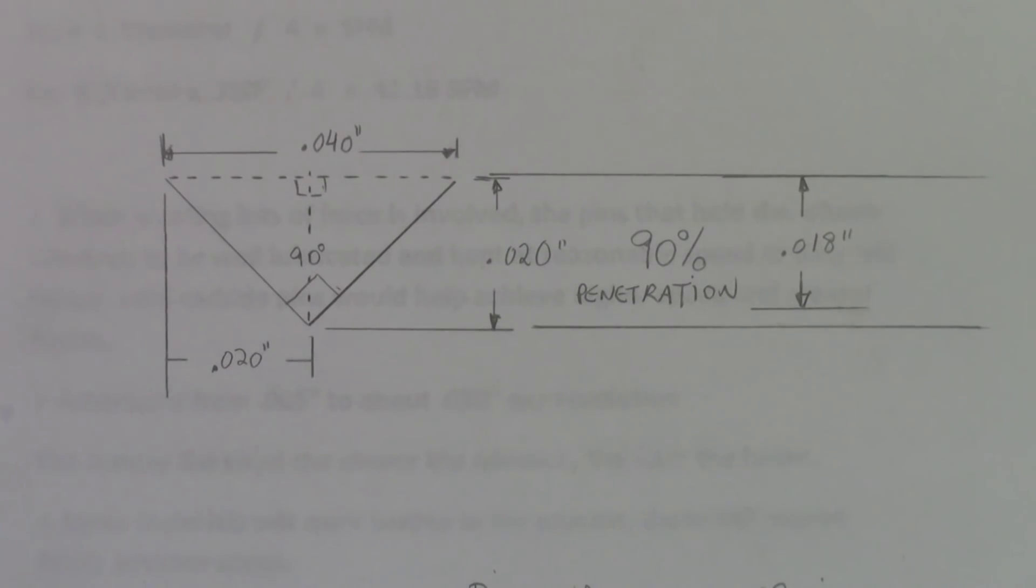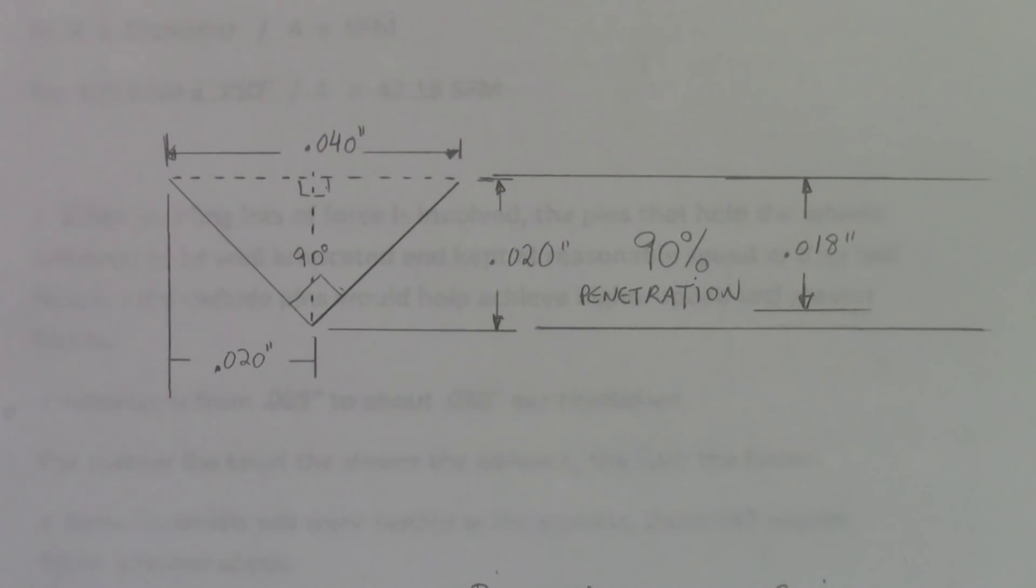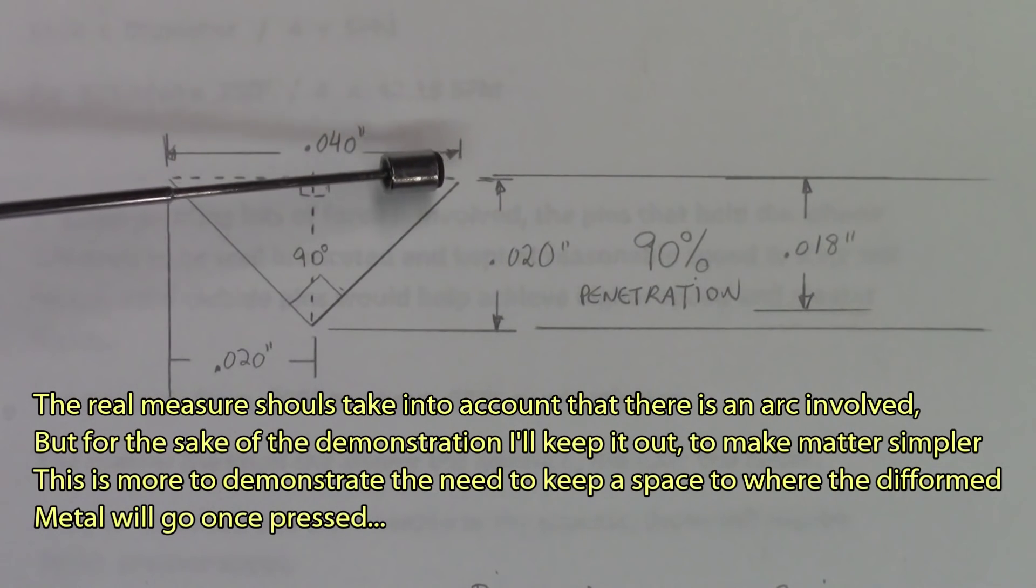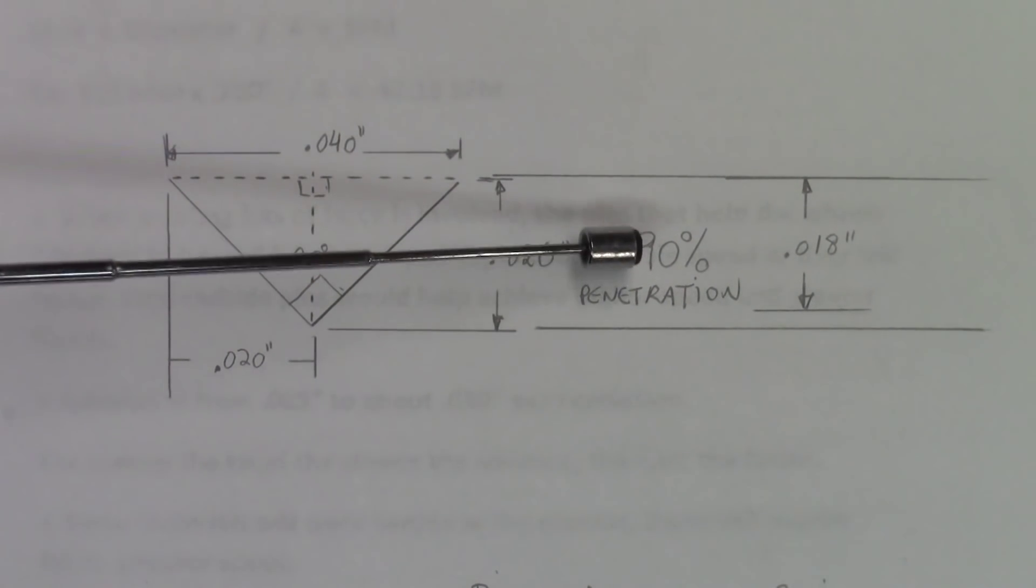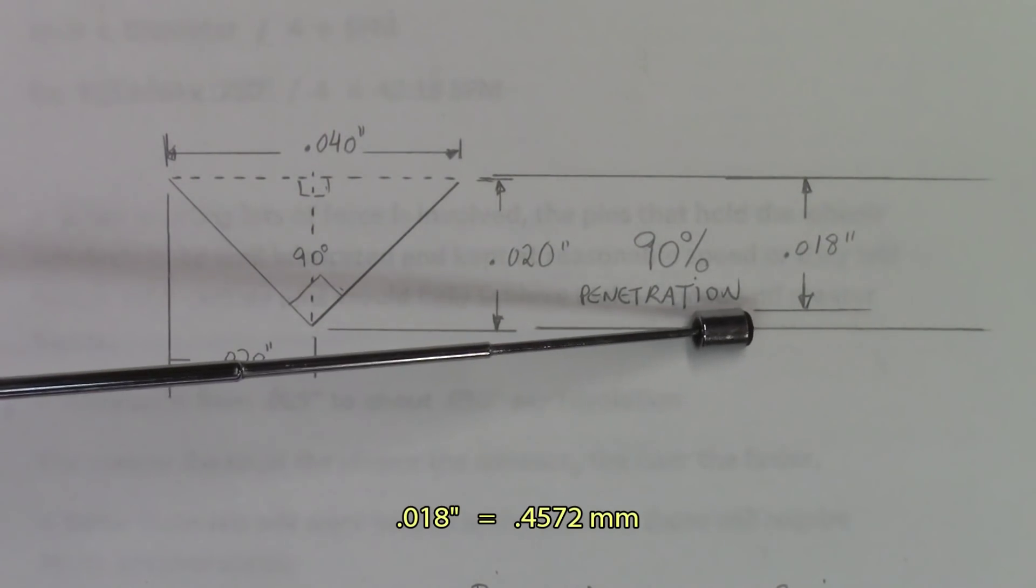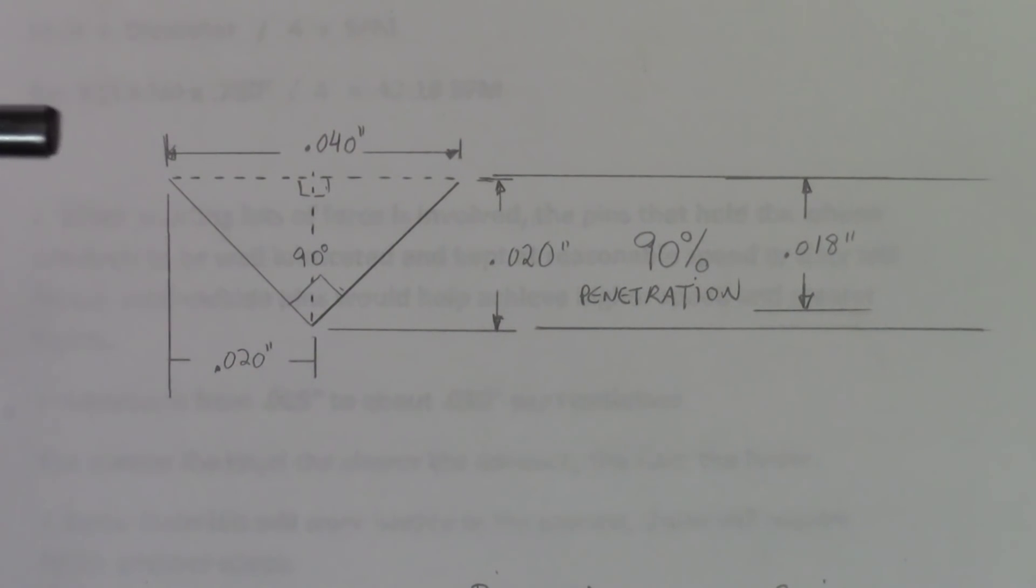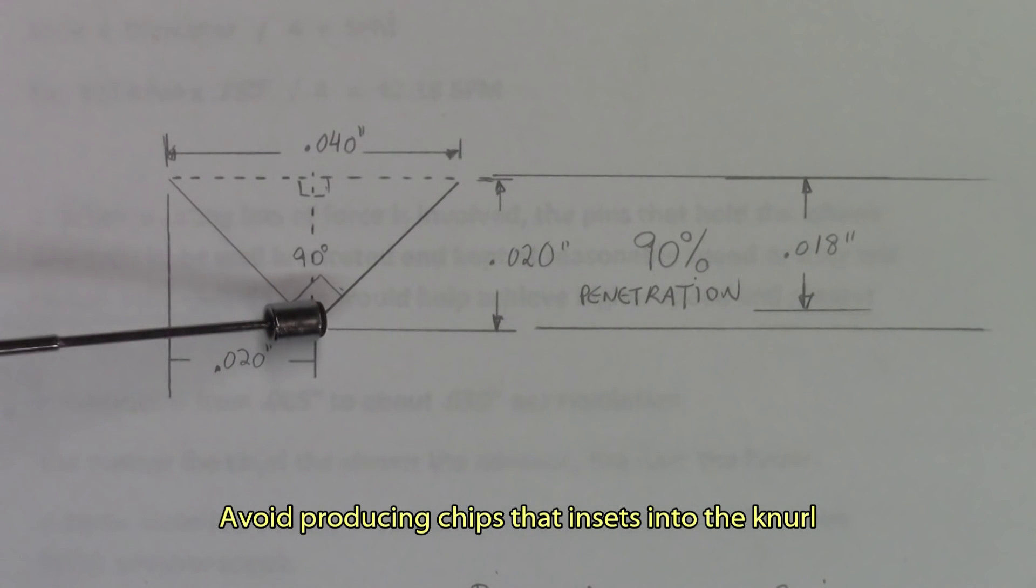When performing knurls using a form type knurling wheel, the goal you're going to try to achieve as far as penetration is concerned is 90%. How do we measure that? We got the pitch here, which is 40 thousandths. You want to measure the height of the 90 percent penetration there. If you put the height there, it will divide by two, which is 20 thousandths there, 20 thousandths there. And since these two angles there are 45 degrees and this is a right angle, you will get a height of 20 thousandths there. The calculation is easy. 90% of 20 thousandths will give you 18 thousandths. That's how much you got to penetrate into the metal you want to knurl to get some pretty decent knurl. This will avoid you from over knurling, which will pack the end there and displace more metal than you need to displace.